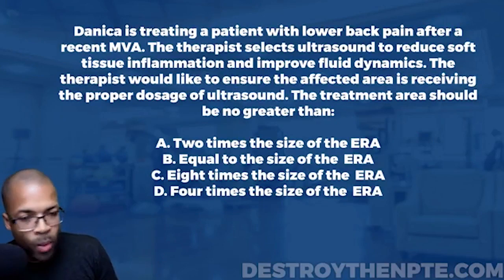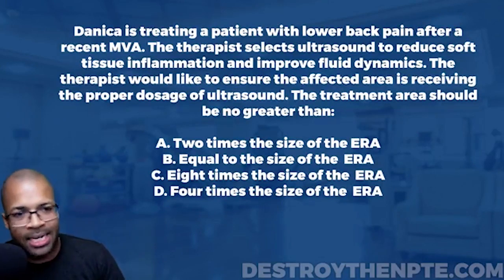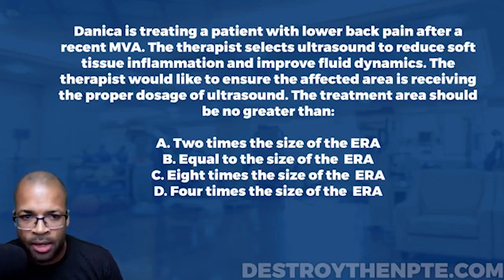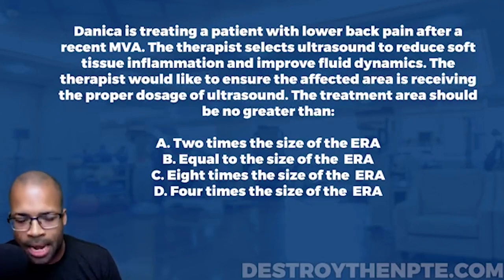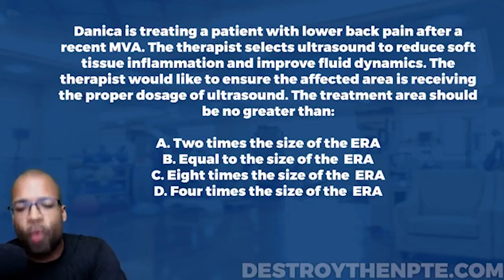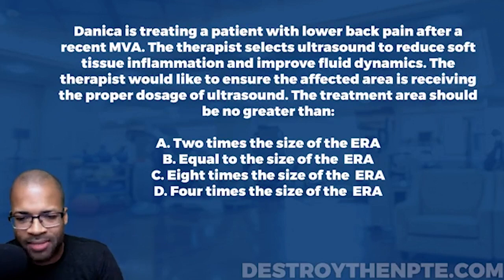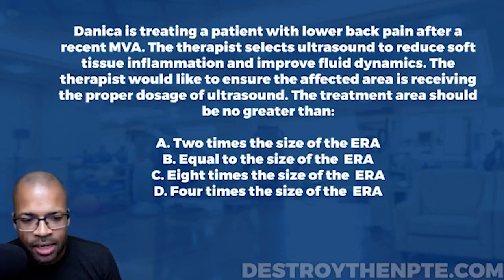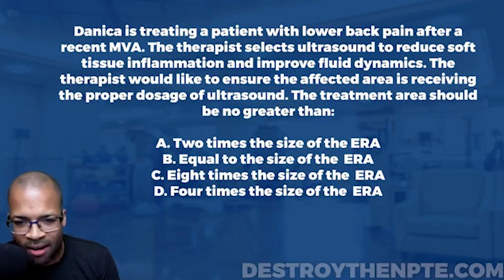For this week's Challenge Wednesday, we have physical therapist Danica treating a patient with lower back pain after a recent MVA. The therapist selects ultrasound to reduce soft tissue inflammation and improve fluid dynamics, and wants to ensure the affected area receives the proper dosage. The treatment area should be no greater than: A) two times the size of the ERA, B) equal to the size of the ERA, C) eight times the size of the ERA, or D) four times the size of the ERA.